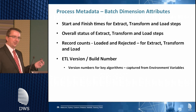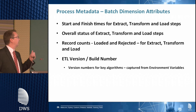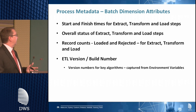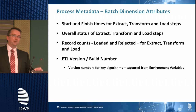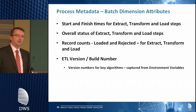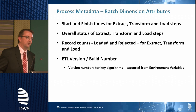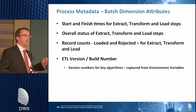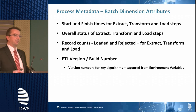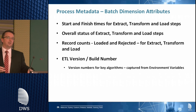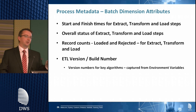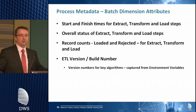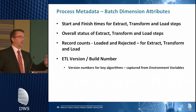In the batch dimension, we've got start and finish times for extract, transformation, and load; an overall status for the job; and total record counts, ETL versions, and build numbers. The build number goes back to what I was talking about before — tracing the build of a job. If we see a particular row that was loaded by build number 37, we can trace that back to program names and version numbers and see the actual code that loaded that job.